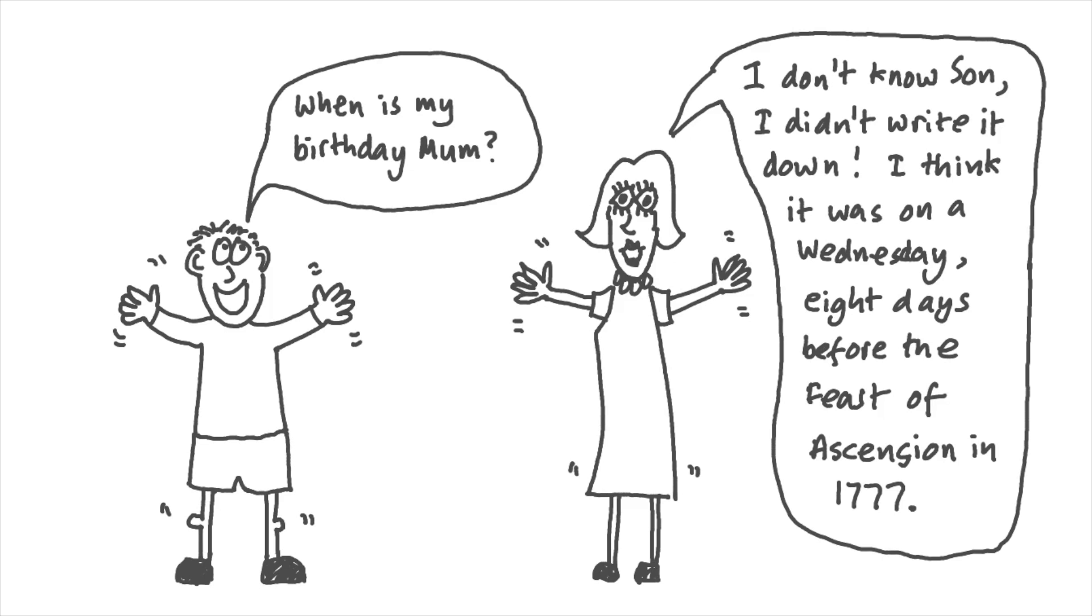For example, it's said that his mother, who couldn't read or write, never wrote down his date of birth but remembered that he'd been born on a Wednesday, eight days before the feast of Ascension that year. In the Christian tradition, the feast of Ascension is celebrated on the 40th day of Easter, which moves each year based on the phases of the moon. Gauss quickly used this information to work out that he must have been born on the 30th of April. But he didn't just do that—he came up with a clever way of working out the date of Easter in any past and future years.